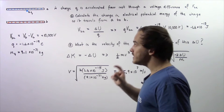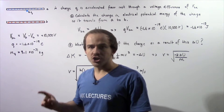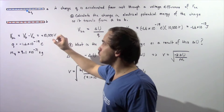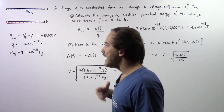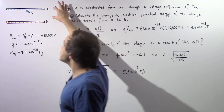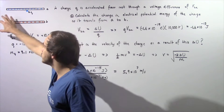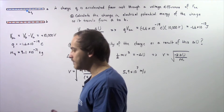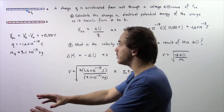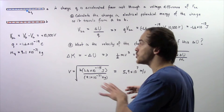When we take our negative charge and place it at position A and release it, it will begin to travel from position A to position B. It will travel from a lower voltage to a higher voltage.